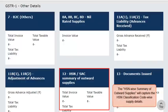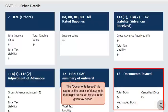The HSN-wise Summary of Outward Supplies will capture the HSN Classification Code-wise supply details. This tile captures the total taxable value of each item supplied and each service provided in the given tax period. Finally, the Documents Issued tile captures the details of documents that might be issued by you in the given tax period. Examples include the invoice range specifying the starting and ending serial numbers of invoices issued, total count of invoices issued, number of invoices that were cancelled, and the number of net invoices issued after cancellation.